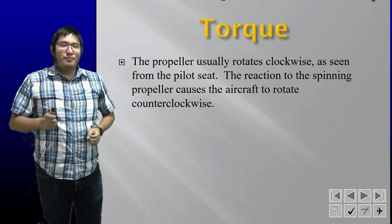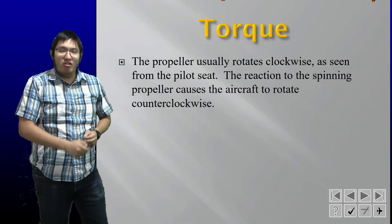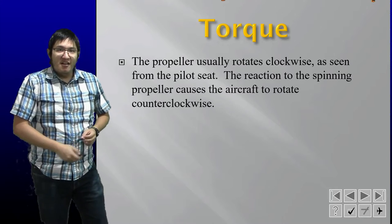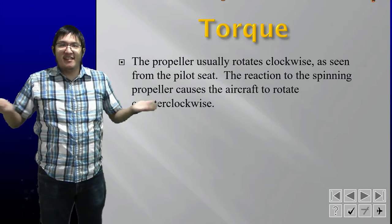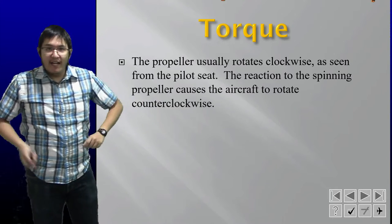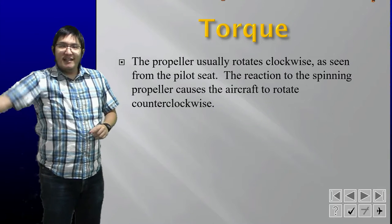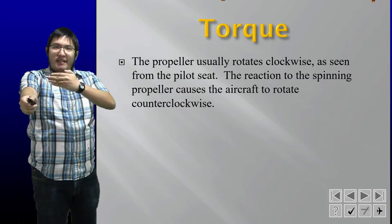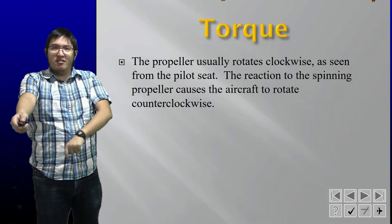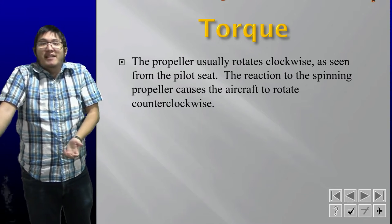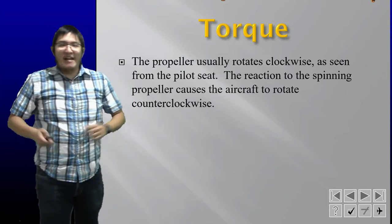The reaction to the spinning propeller causes the aircraft to rotate counterclockwise. Because of physics, as the propeller turns clockwise, the aircraft will have a tendency to rotate counterclockwise — just obviously not as dramatically, otherwise that'd be nuts.